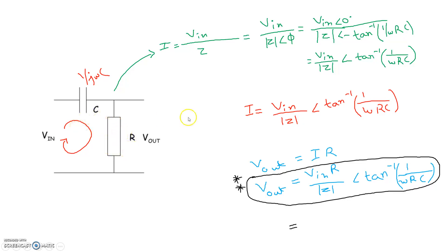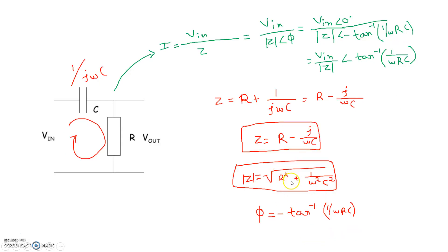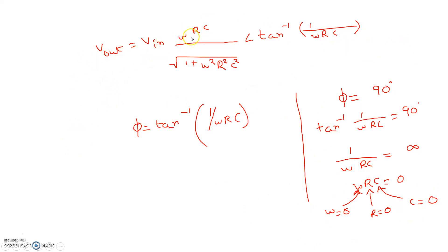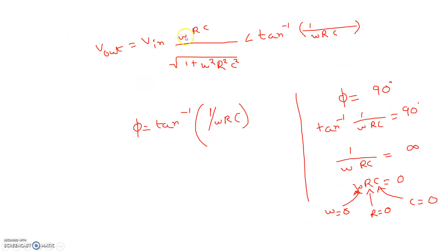The output voltage is V_out = i × R (by Ohm's law). Substituting the expression for i, we get V_out = V_in × R / |Z| ∠ tan⁻¹(1/ωRC). Substituting |Z| = √(R² + 1/ω²C²), we get V_out = V_in × R / √(R² + 1/ω²C²) ∠ tan⁻¹(1/ωRC).